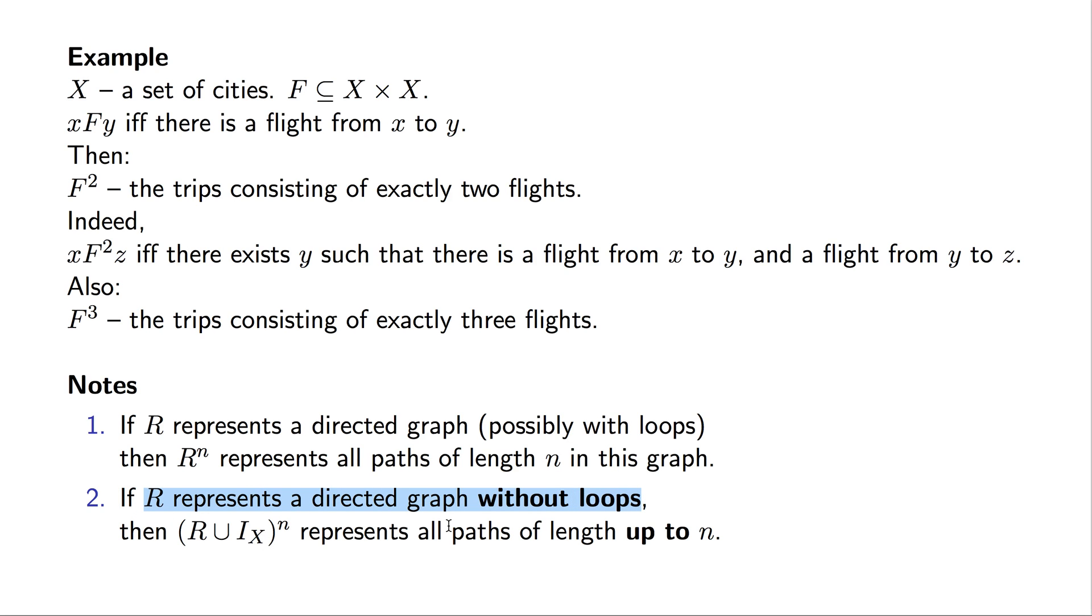If R represents such a graph, then we will consider the union of R and the identity relation on the underlying set. By forming this union we are actually adding loops to every node. Now for every node in the graph, there is a directed edge from the node to itself.